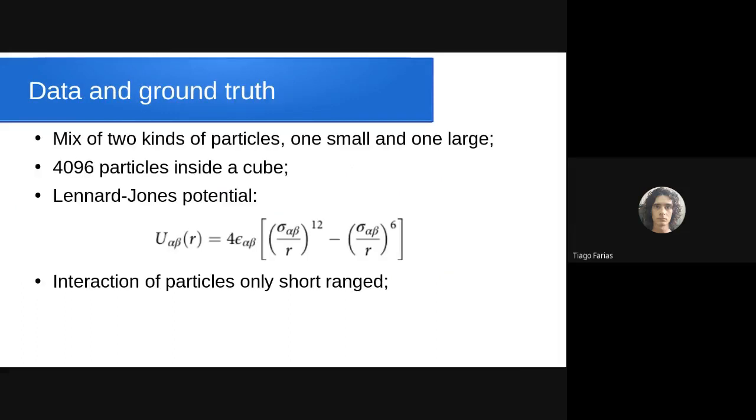Because it's machine learning, you need data to train the neural network. Here's how they get the data: they made a mixture of two kinds of particles, one small and one large, 4096 particles inside a cube interacting by Lennard-Jones potential. These particles are simulated with molecular dynamics, and the interaction of particles are only short ranged.